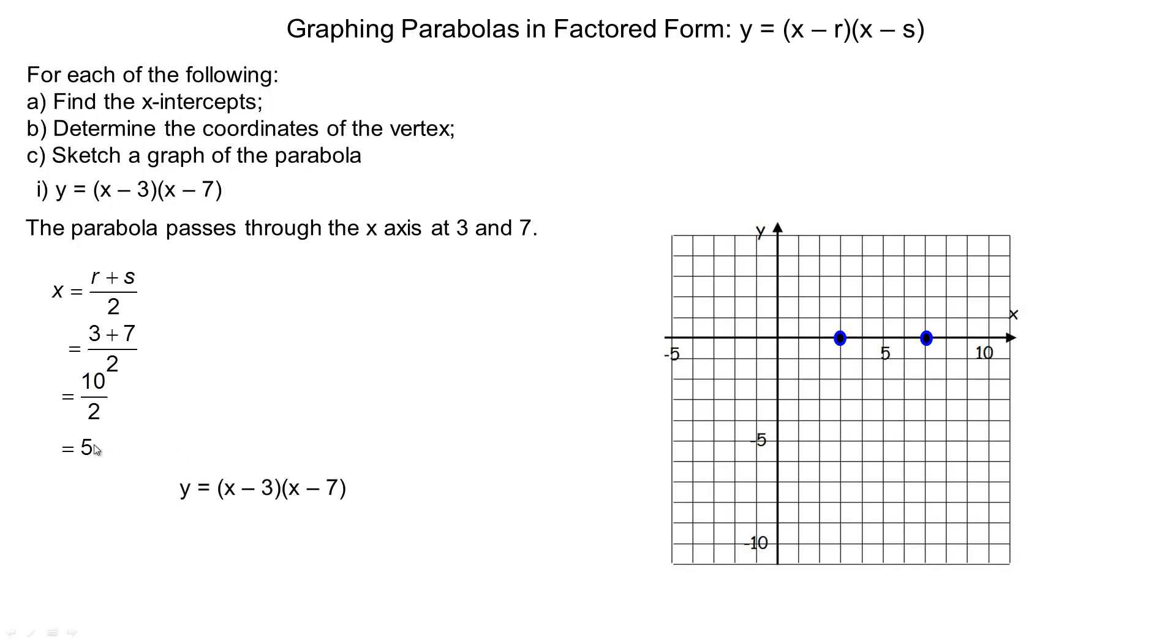We use that 5 and substitute 5 in place of x here and here, and that calculation will give us the y-coordinate of the vertex. So 5 is the x-coordinate. This is going to give us what the y-coordinate is. So 5 minus 3 is 2, 5 minus 7 is negative 2, and we multiply those, we get negative 4. So the vertex's coordinates would be 5 from here and negative 4 from this y calculation. So we put a dot at 5, negative 4 here. That's the vertex. The parabola passes through the x-axis at 3 and 7, so that's the shape it would have to have. So that's a sketch of y equals x minus 3, x minus 7.